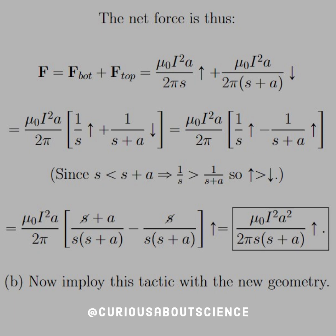Since S is less than S plus A, and both are positive distances, taking their inverses flips the inequality: 1 over S is greater than 1 over S plus A. That tells us the magnitude of the force pointing up is greater than the force pointing down, so the net result points up. Flipping the sign on the second fraction to minus and keeping the direction up, we find a common denominator — the S's cancel leaving a factor of A in the numerator — giving mu naught I squared A squared over 2 pi S times S plus A, pointing up.